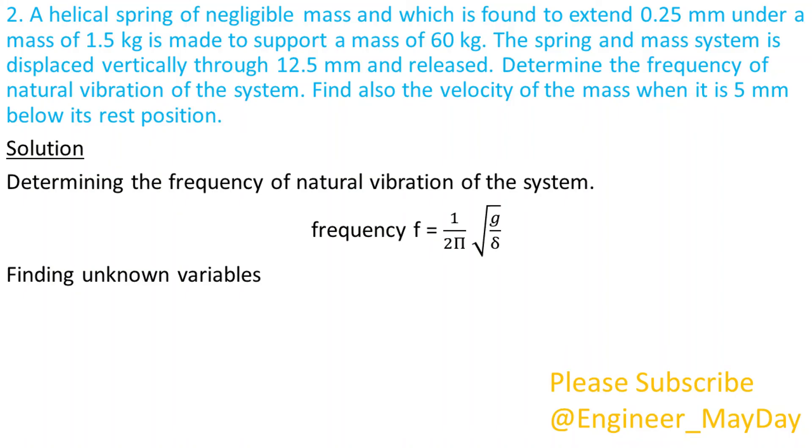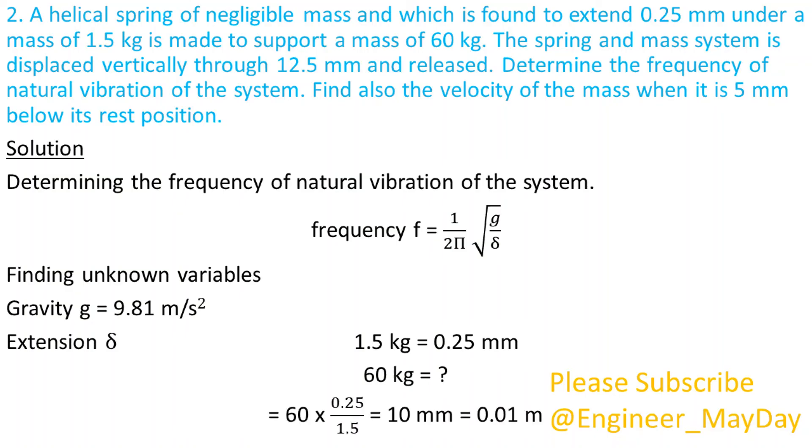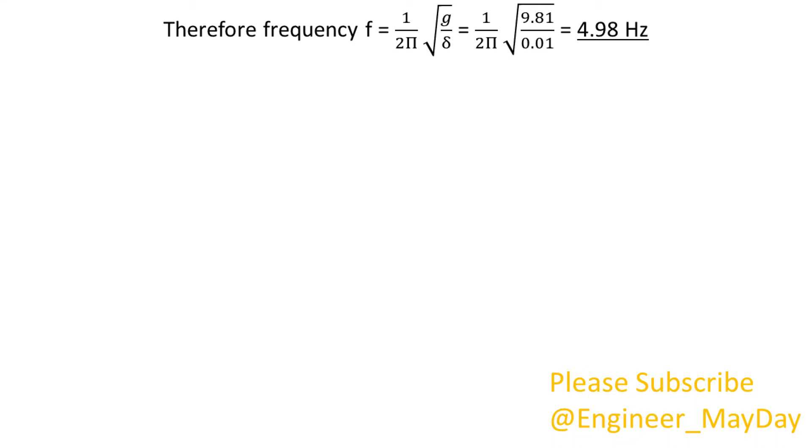Finding unknown variables. Gravity is equal to 9.81 meters per second squared. Extension delta will be found by equating the following. Thus extension is found to be 0.01 meters. Therefore frequency is 4.98 hertz.